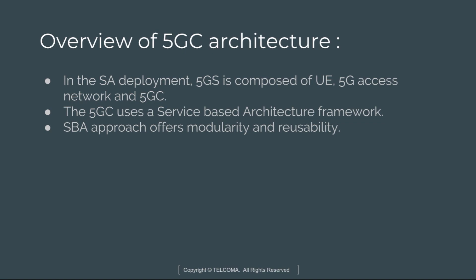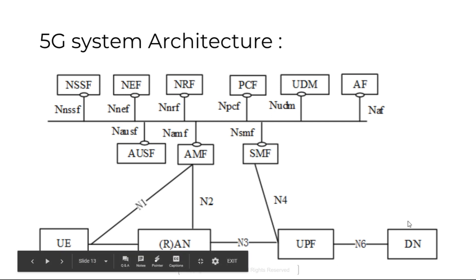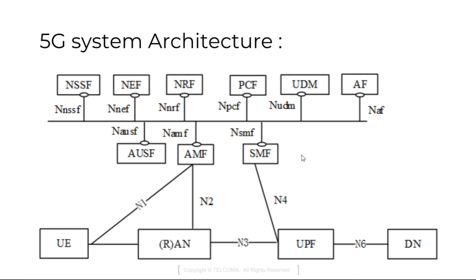Here is the 5G system architecture. We have UE connected to New Radio (radio access network), which connects to UPF (User Plane Function), and then to the external data network. Reference points N3 and N6 connect these, while N1, N2, and N4 connect to the various other network functions.